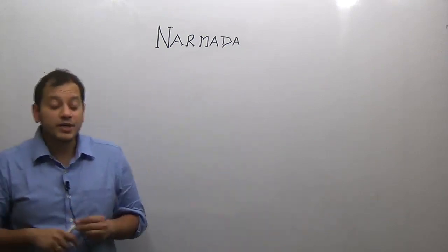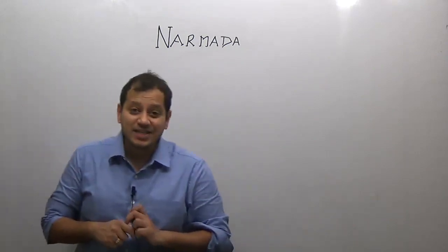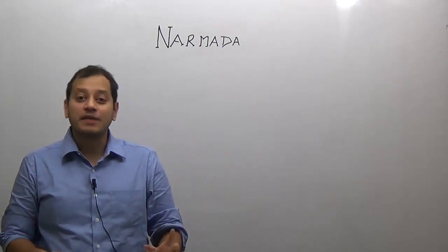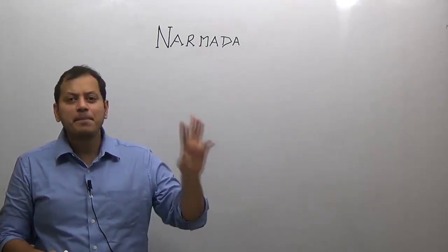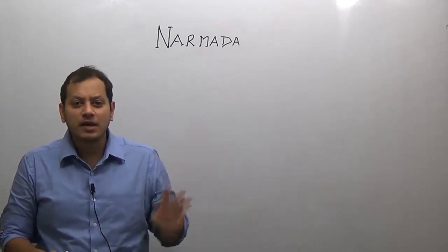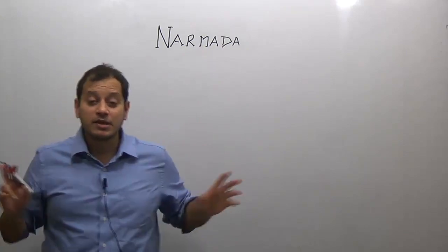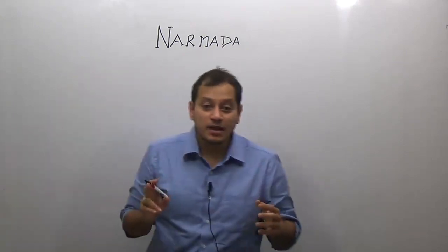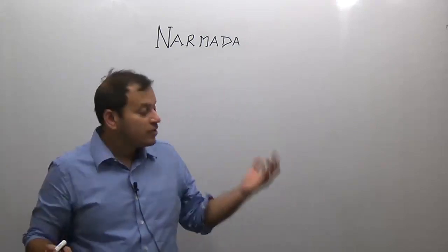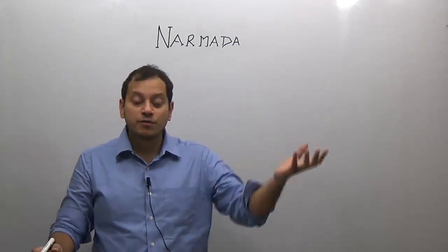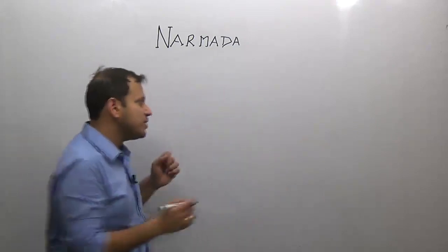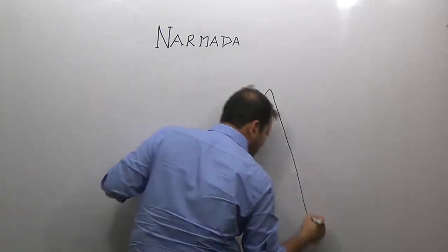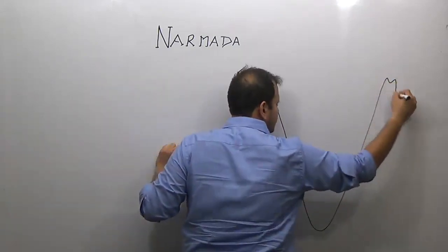Hi friends, welcome to the study of the largest west-flowing river of India, that is the river Narmada. There are three major peninsular rivers which flow to the west, and river Narmada is the largest among them.